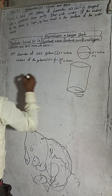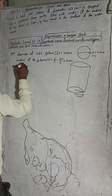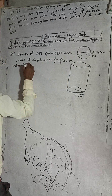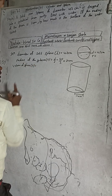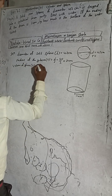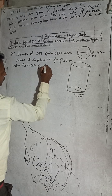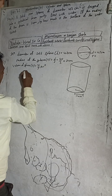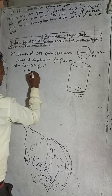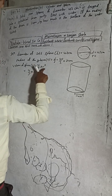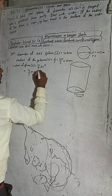Now the volume of the sphere. The formula for the volume of a sphere is 4 by 3 pi r cubed. So volume equals 4 by 3 pi, and the radius of this sphere is 21, so we have 21 cubed.